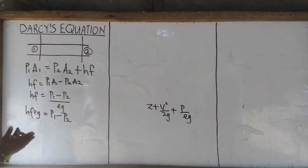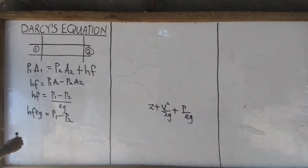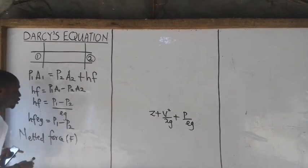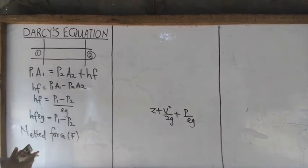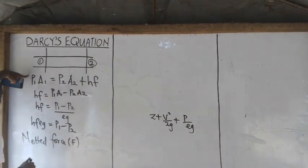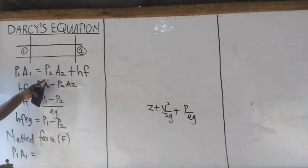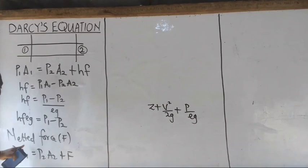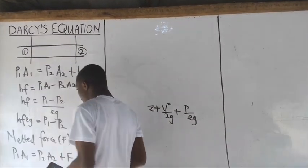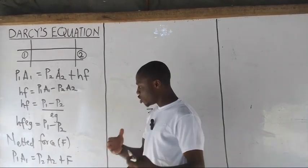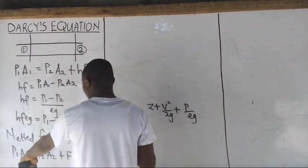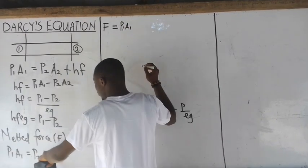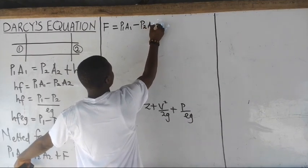At this point, let's introduce a concept called Net Force, denoted as F. We have P1·A1 = P2·A2 + HF. Hence, we include the net force F at this section. Making F the subject of the formula, I will have F = P1·A1 minus P2·A2.